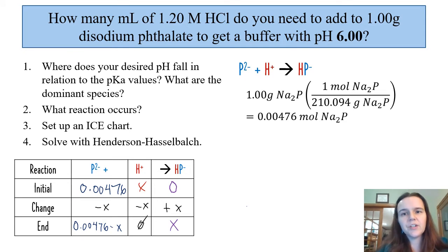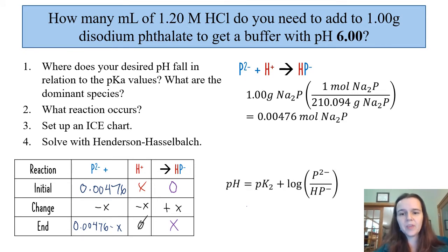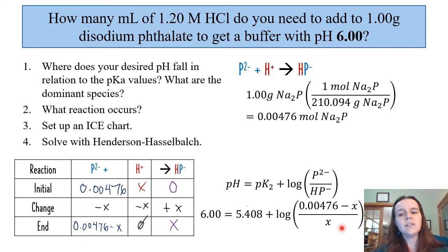Once that ICE chart is done, we can solve this using the Henderson-Hasselbalch equation. That is going to be our pH equals pK2 plus the log of P2- over HP-. Our desired pH is 6. The pKa, the second pKa, is 5.408. We start to put in this information where the P2- at the end is 0.00476 minus x, and the HP- at the end is x.